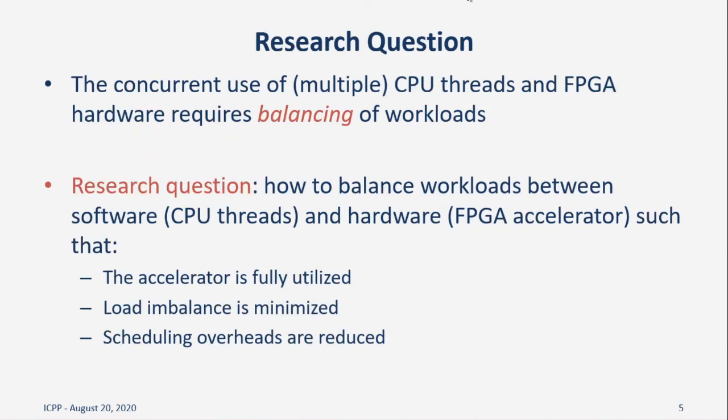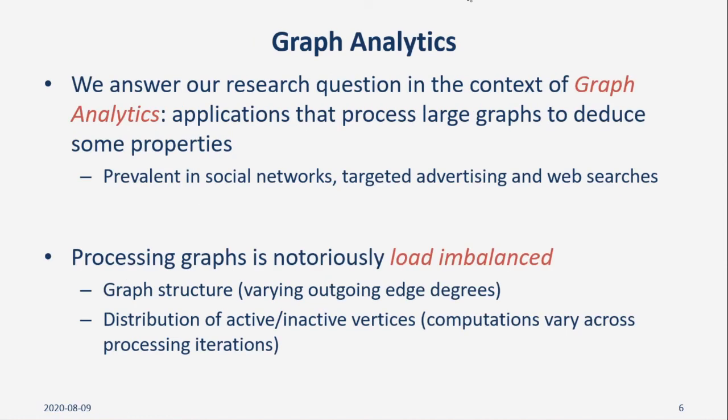This ability for concurrent use of CPU threads in tandem with the FPGA necessitates balancing of the workload. In this work, we focus solely on the question of how to effectively partition workloads between software and hardware to ensure that the FPGA performance is maximized, the workload is balanced, and to achieve this with minimal loss in performance due to overhead. We address this question within the context of balancing graph algorithms. Graph analytics is quite prevalent today, especially with the advent of social media. But graph algorithms tend to be highly load imbalanced, primarily due to the imbalanced nature of the graphs themselves, as well as the varying distribution of active vertices across processing iterations.